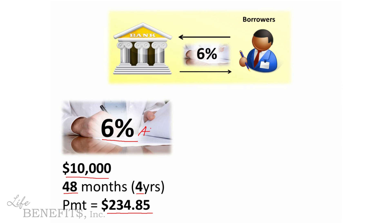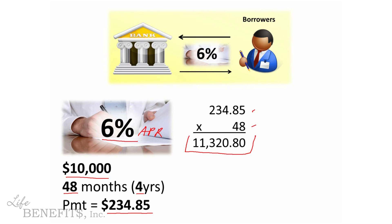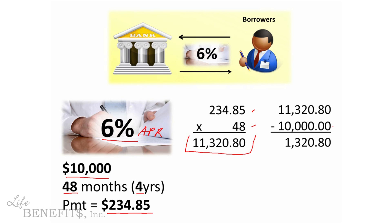Well, this is the APR interest rate, and it helps us figure out the other factors on the loan, but by itself it doesn't tell us a whole lot. To find the real volume of interest, we take the monthly payment of $234.85 and multiply it by 48 — the number of monthly payments. This tells us the total payments on the loan: $11,320.80. To find the total interest, we take that total payments figure and subtract the original $10,000 of the loan, giving us total interest of $1,320.80.